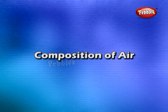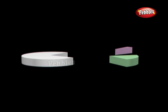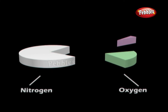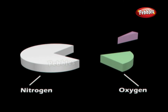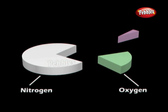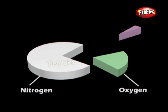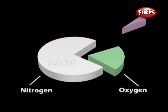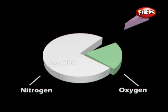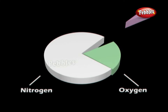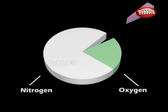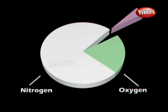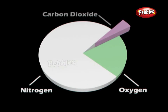Composition of air: Air contains mostly nitrogen and oxygen. These two gases together make up 99% of the air. The remaining 1% is constituted by carbon dioxide and a few other gases, water vapor, and dust particles.